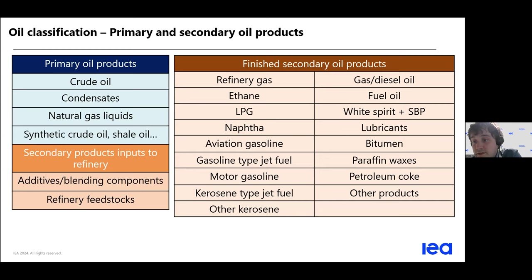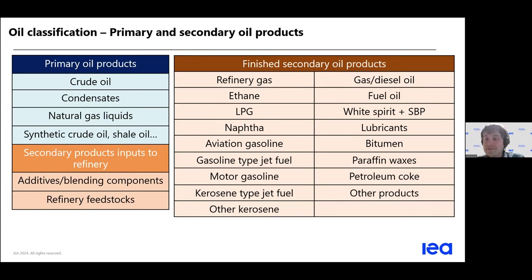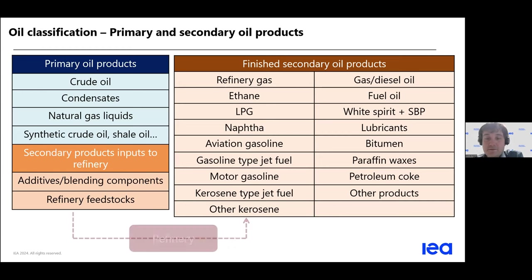On the right side, you can see all the secondary products that result from refining processes — a lot of different products defined by very specific specifications. The main ones you know at least by name: gasoline, diesel, kerosene, and also a few non-energy products like white spirits, lubricants, or bitumen, which are not used for energy but we have to take into account because the energy they represent is still transformed into these secondary products.